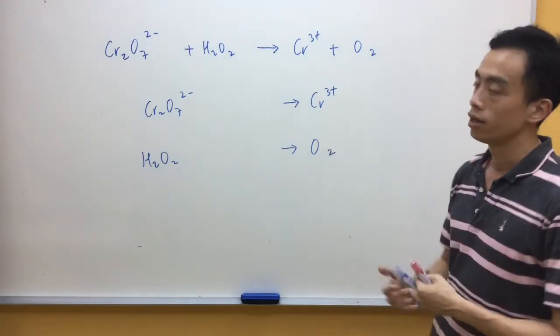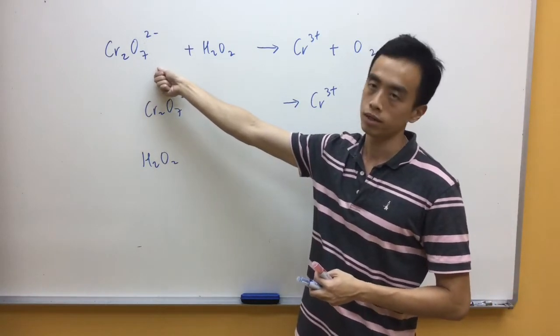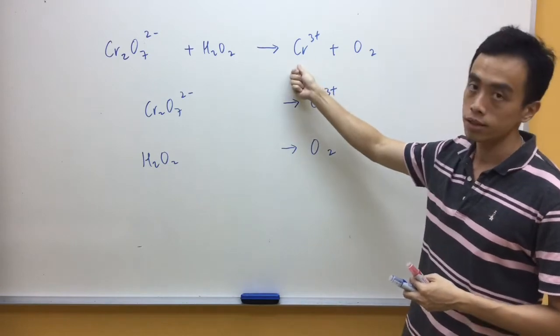Now let's take a look at this example. In this case, we have Dichromate Cr2O7^2- reacting with H2O2 to give Cr^3+ and oxygen.